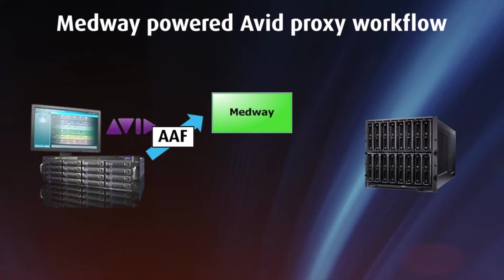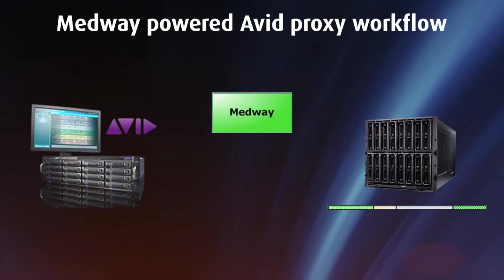This is passed through to the Medway system, which processes the AAF file to identify the clips referenced within the sequence. Medway will then look for these files on the source server and identify the individual segments that are required from each of the source clips. If required, it can add pre-configured handles to the start and end of each segment.